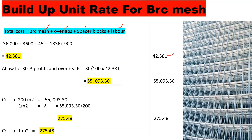This is the cost for 200 square meters. When building a unit rate, we need the cost per one square meter. Dividing 55,093.30 by 200 square meters gives us 275.48 shillings per square meter. So when you need to cast a BRC slab, the unit rate cost is 275.48 shillings per square meter.